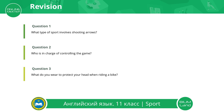Question number one: What type of sport involves shooting arrows? Question number two: Who is in charge of controlling the game? Question number three: What do you wear to protect your head when riding a bike? Archery is the type of sport that involves shooting arrows. Referee is in charge of controlling the game. You wear a crash helmet when you ride a bike.